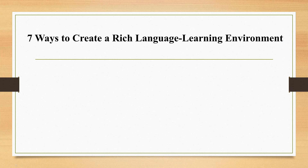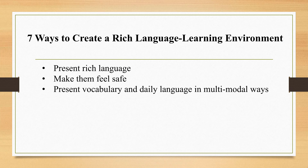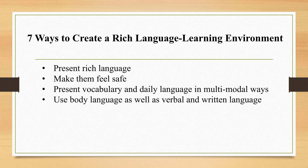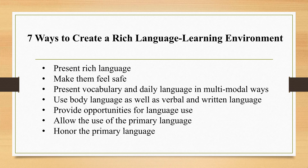Here are seven ways to create a rich language learning environment: present rich language — don't be afraid to present second-tier or third-tier vocabulary, as language learners are often attracted to and remember words that sound interesting; make students feel safe; present vocabulary and daily language in multimodal ways; use body language as well as verbal and written language; provide opportunities for language use; allow the use of the primary language; and honor the primary language.